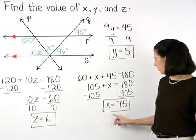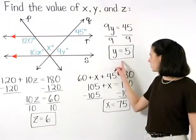So x equals 75, y equals 5, and z equals 6.